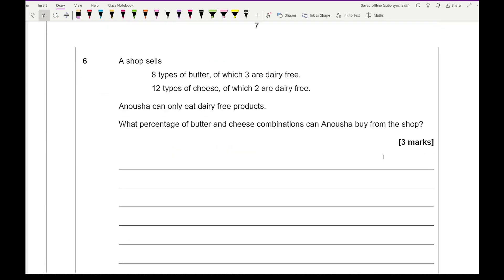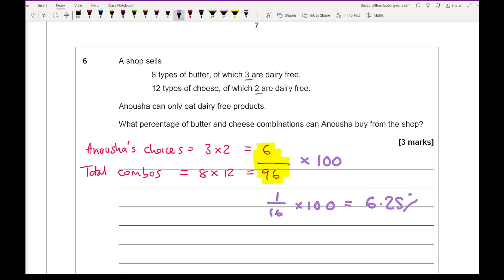Moving on to question 6, it says that a shop sells 8 types of butter of which 3 are dairy free, 12 types of cheese in which 2 are dairy free. Anusha can only eat dairy free products. What percentage of butter and cheese combinations can Anusha buy from the shop? So for this, in terms of Anusha's choices, that's going to be 3 times 2, which is 6. Then in terms of the total combos, that's going to be 8 times 12, which is 96. So then writing that as a percentage as the question says, if I then multiply 6 over 96 by 100, that basically simplifies to give me 1 over 16 times 100, and that's going to equal 6.25 percent.